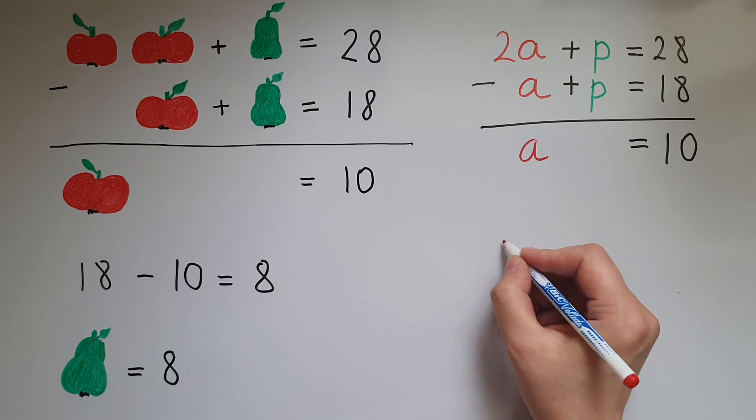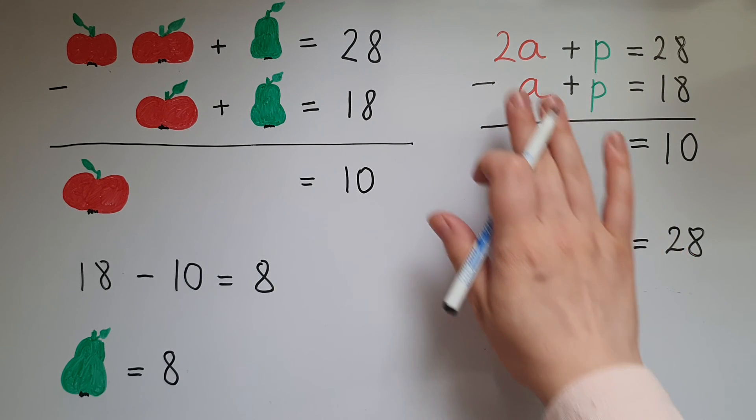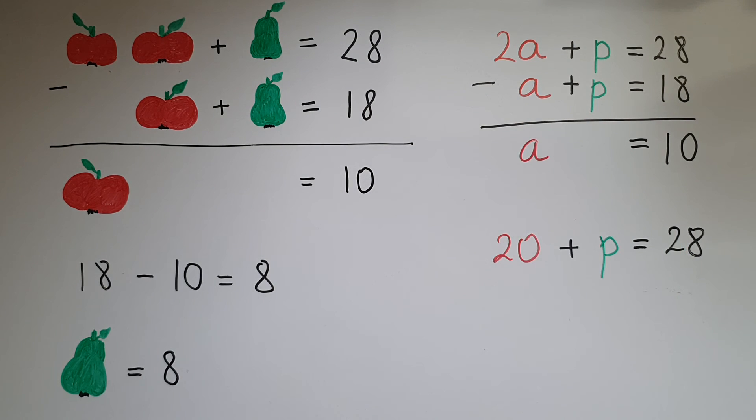And add the pear. That gives us 28. So we haven't changed anything. We've just substituted the value for a into the first equation.